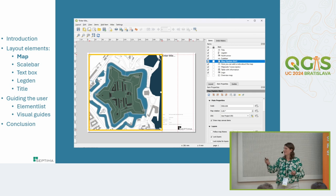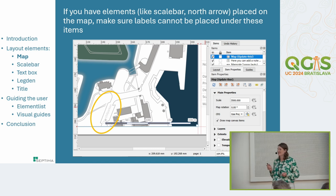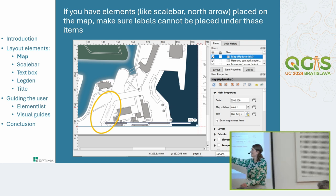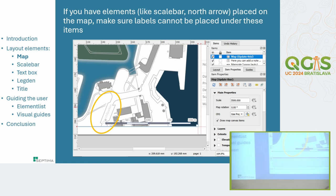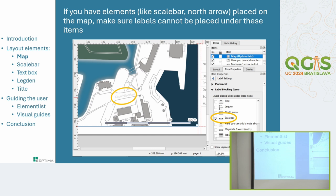The first element is the map, shown with the orange box. There's a really useful setting in QGIS to avoid label conflicts — for example, here you can see a conflict between the scale bar and the road label 'Churchill Parken.' In two clicks you can say 'avoid placing labels under these items,' and if you check the scale bar, QGIS automatically moves the road name so it looks better. Very easy, but it can really help maps look better.